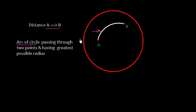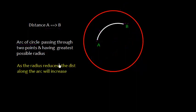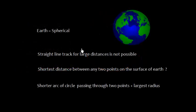This circle has the greatest possible radius, meaning it passes through the center of the sphere. If the radius of the circle is less or reduces, the distance along the arc will increase. Hence we need a circle with the largest possible radius.